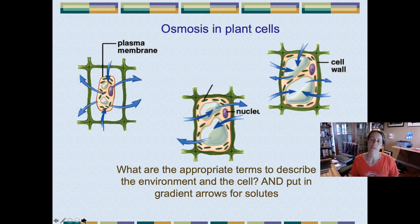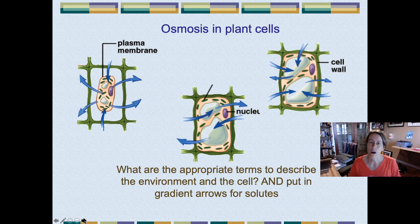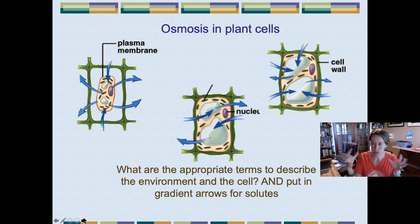You can think of an animal cell as a balloon — just a balloon — where the rubber of the balloon is the membrane. And you can think of a plant cell as a balloon inside of a shoebox, so there's an extra box around there.